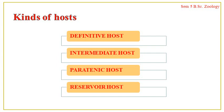The primary or definitive host is the host in which the parasite completes its sexual reproduction — it harbors the adult parasite. Examples: humans are the definitive host for Taenia and Wuchereria bancrofti (which causes elephantiasis), as these complete their sexual reproduction phase in humans. However, in the case of Plasmodium, the human is only an intermediate host — the female Anopheles mosquito is the definitive host for Plasmodium.